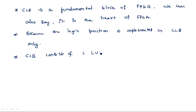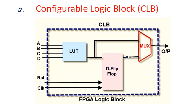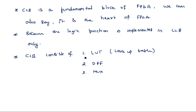The first element inside a CLB is the lookup table (LUT), where the logic function is implemented based on the corresponding truth table. The second element is a D flip-flop. The third is a multiplexer. The lookup table here is a 4-input LUT, meaning any type of logic function with a maximum of 4 inputs can be implemented using this lookup table.